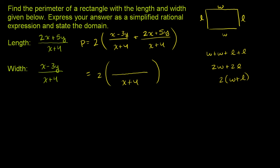Let's simplify it. We have our x terms: x plus 2x gives us 3x in the numerator. Then we have negative 3y and 5y, so negative 3 plus 5 is plus 2y in the numerator.